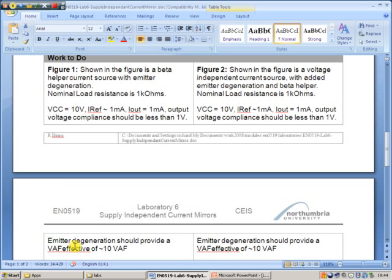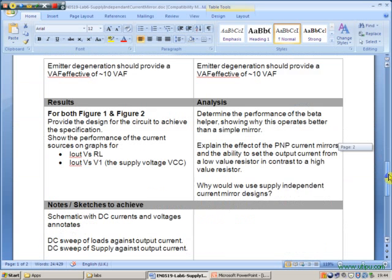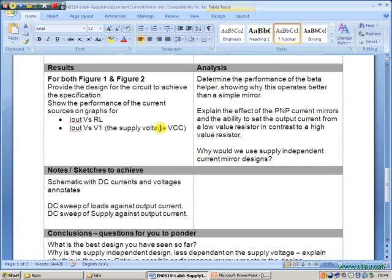Also, emitter degeneration should provide an effective early voltage of about 10 times the normal early voltage. In Figure 2, the exact same specification, however this circuit should operate with more independence to the supply rails.